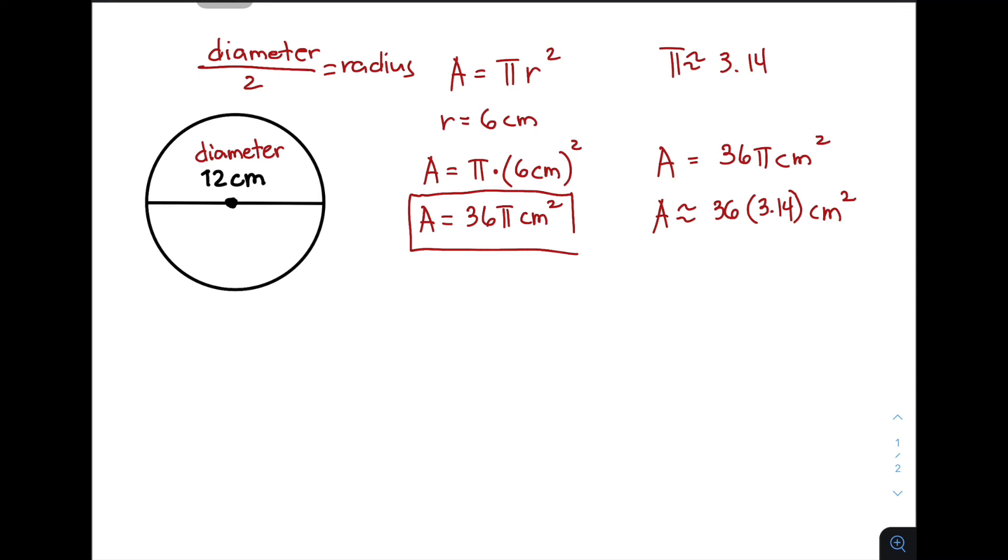Multiplying these numbers, 36 times 3.14, our answer, or the approximate area, is simply 113.04 centimeters squared. And this is now the final answer.